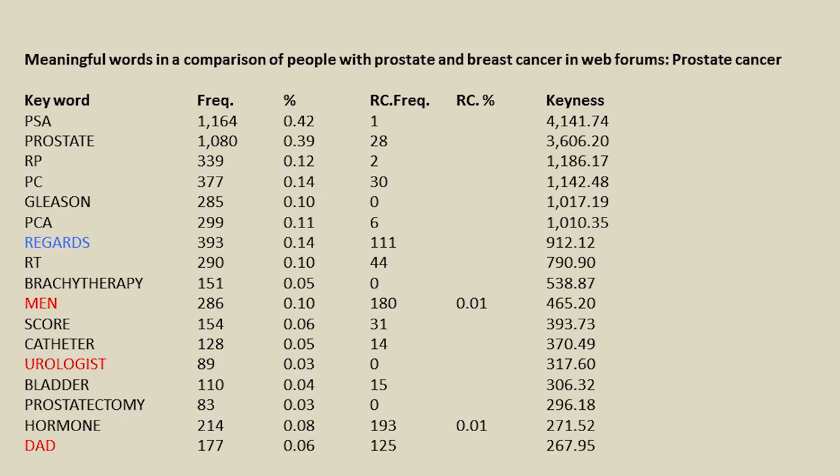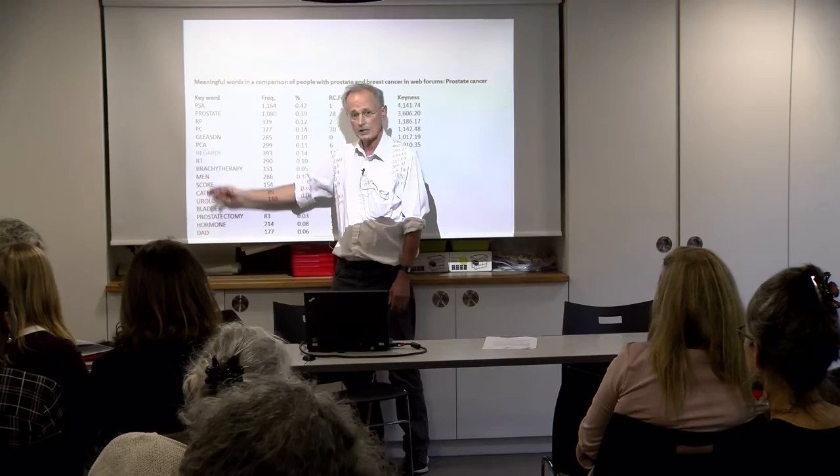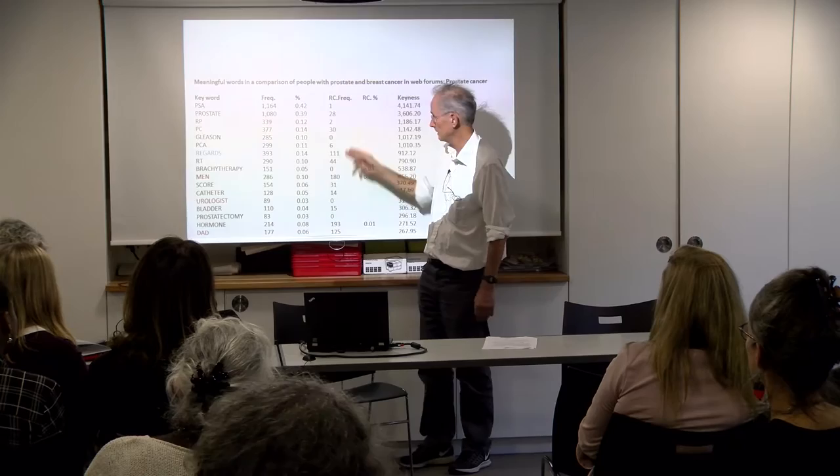RC stands for reference corpus. What I'm doing is comparing the prostate cancer text with the breast cancer text, and discovering that PSA is the word with the most keyness — the most common in the prostate cancer text compared to the breast cancer text. A very simple thing to do, the sort of thing computers can do in microseconds. This is basically a list of words which occur lots and lots in the prostate cancer text but don't occur much, or at all, in the breast cancer text. You've got things like radical prostatectomy — because people just call it RP — PCA for prostate cancer, RT for radiotherapy, the Gleason test, brachytherapy.